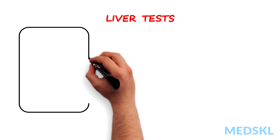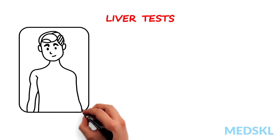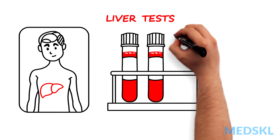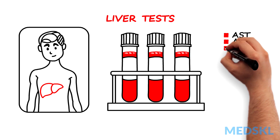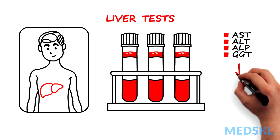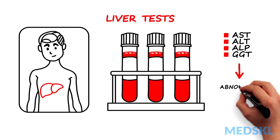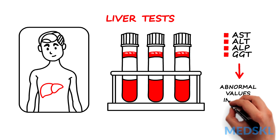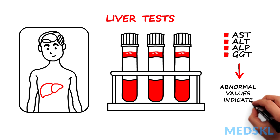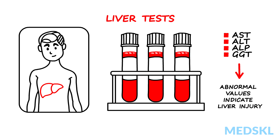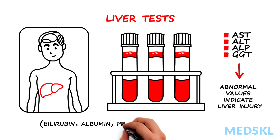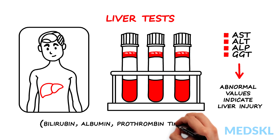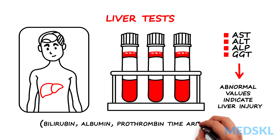Liver tests or liver enzymes, sometimes incorrectly called liver function tests, refer to AST, ALT, ALP and may include GGT. Abnormal values are often found on routine blood tests and indicate liver injury. Bilirubin, albumin, and prothrombin time or INR are better tests of the function of the liver and are the true LFTs.